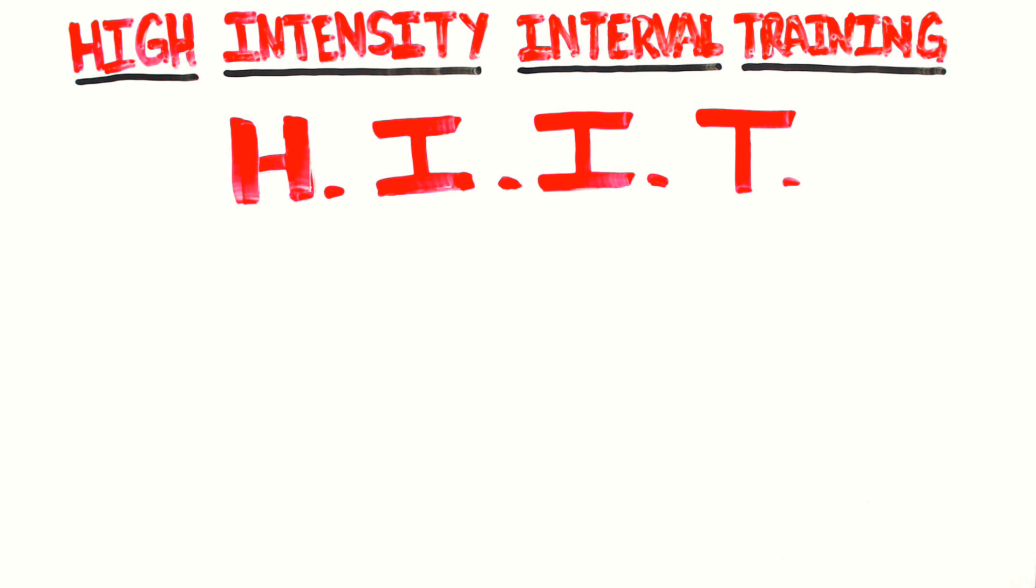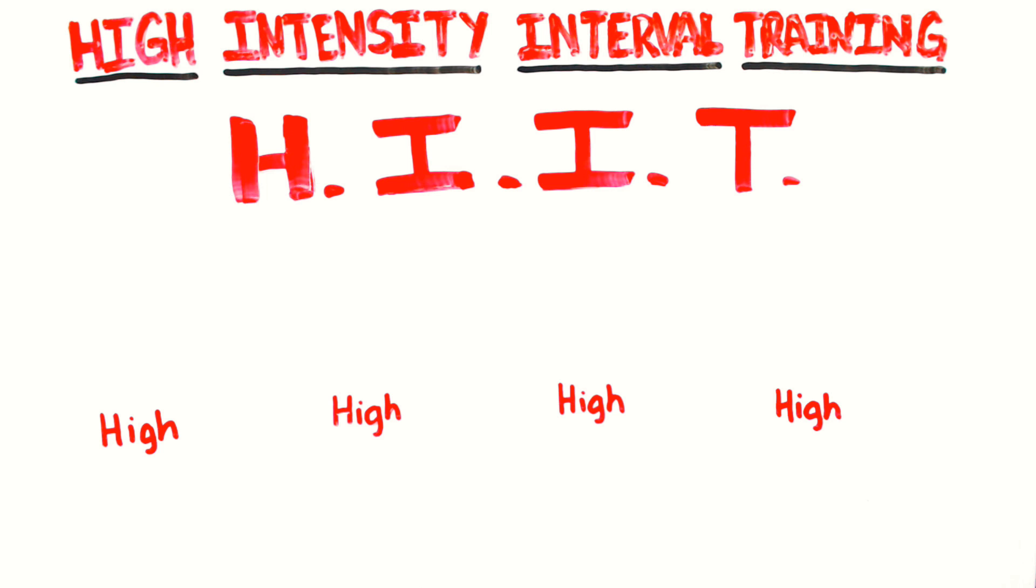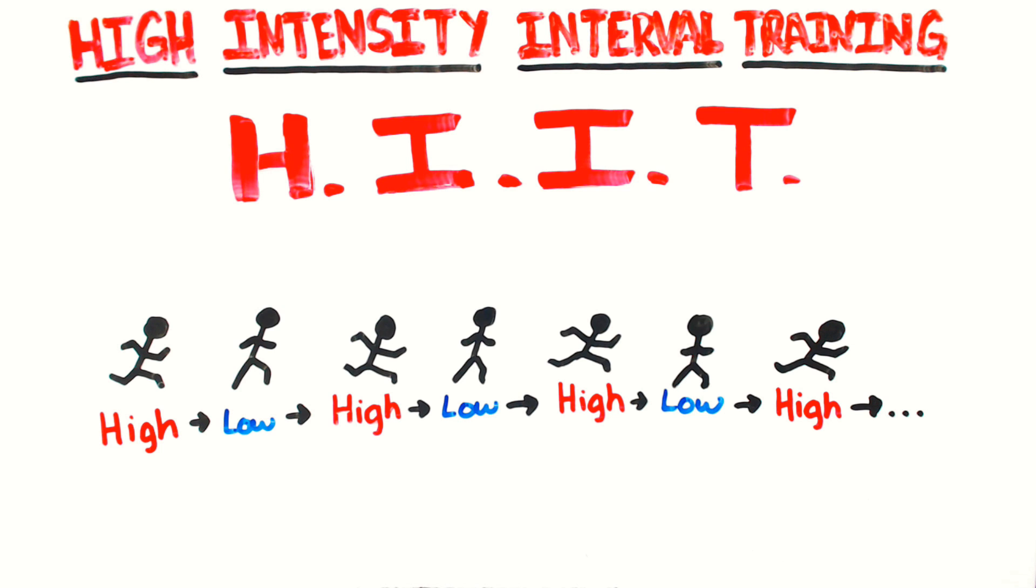The most popular exercise for HIT is alternating sprinting with walking. Each sprint interval lasts between 5 to 30 seconds, and each walk interval will also last between 5 to 30 seconds.